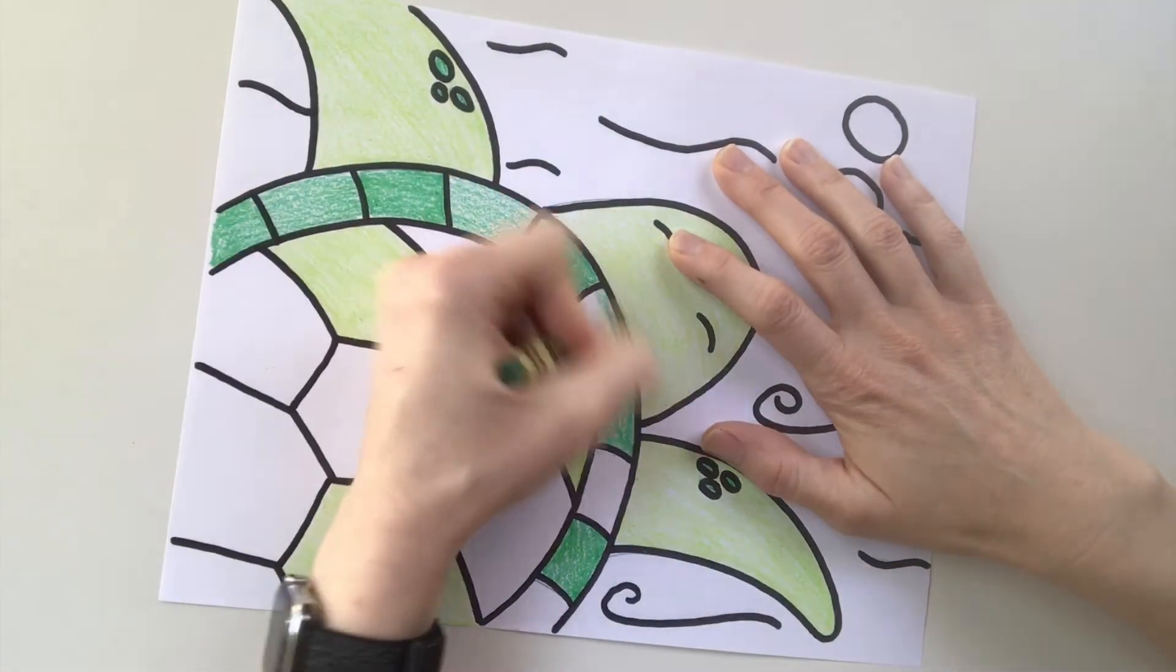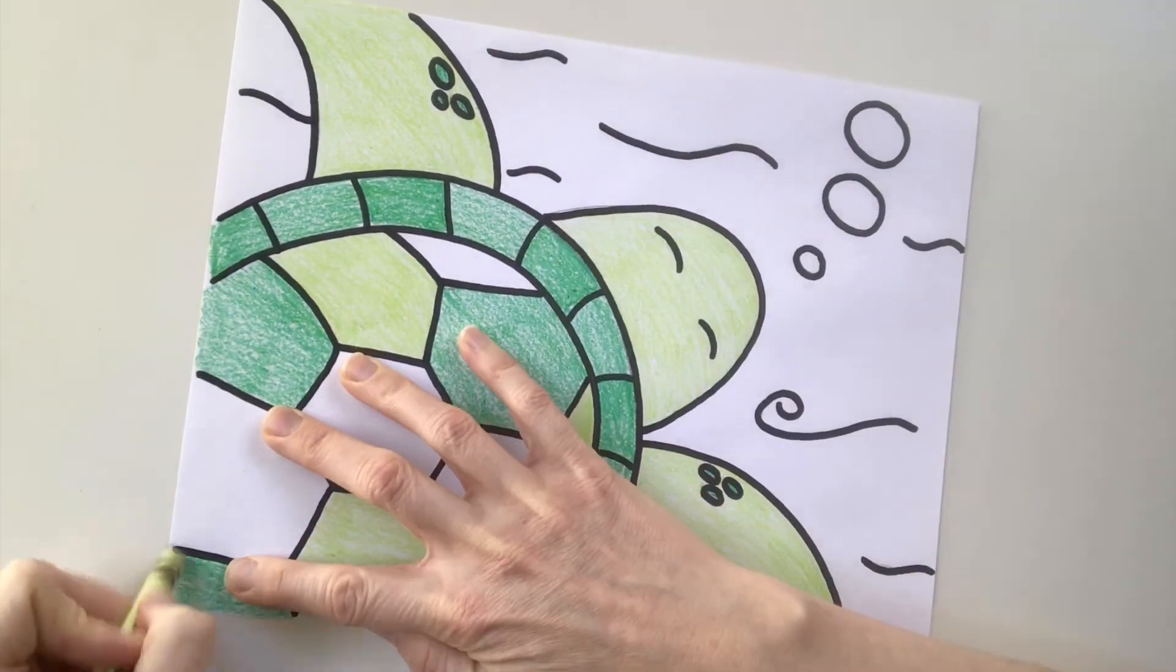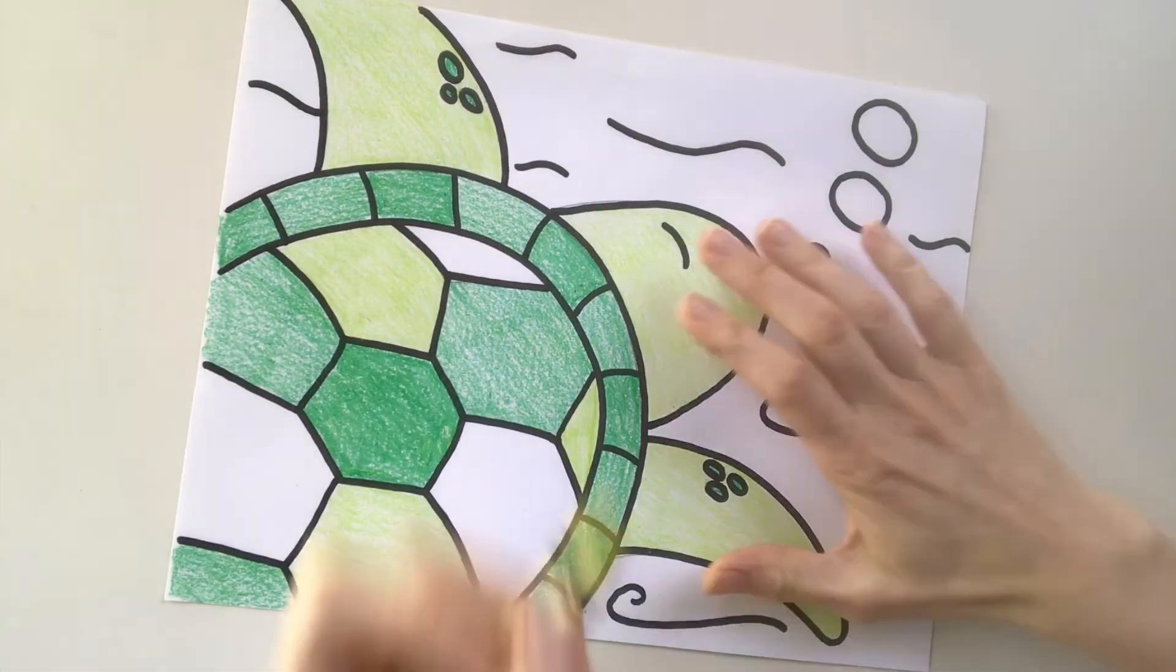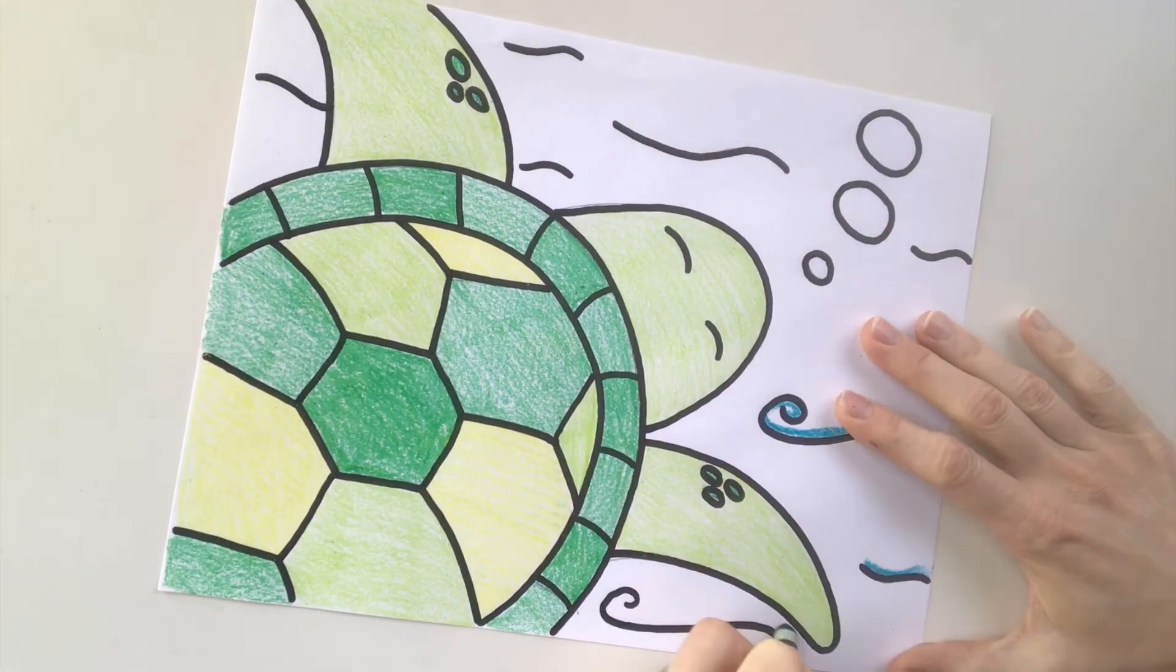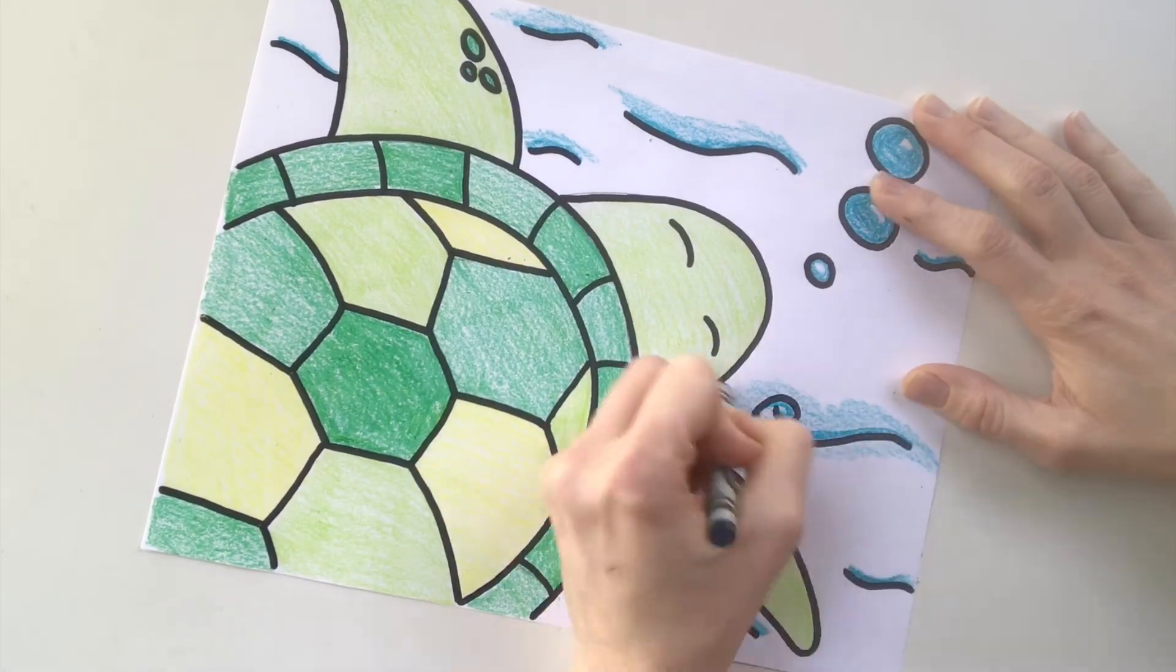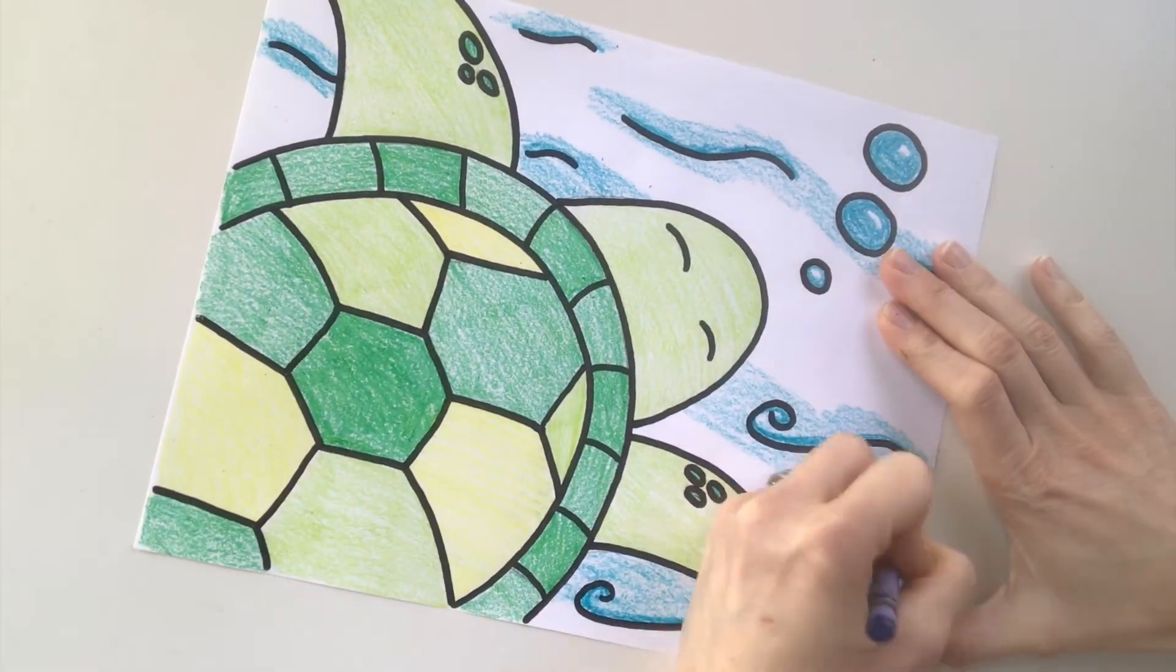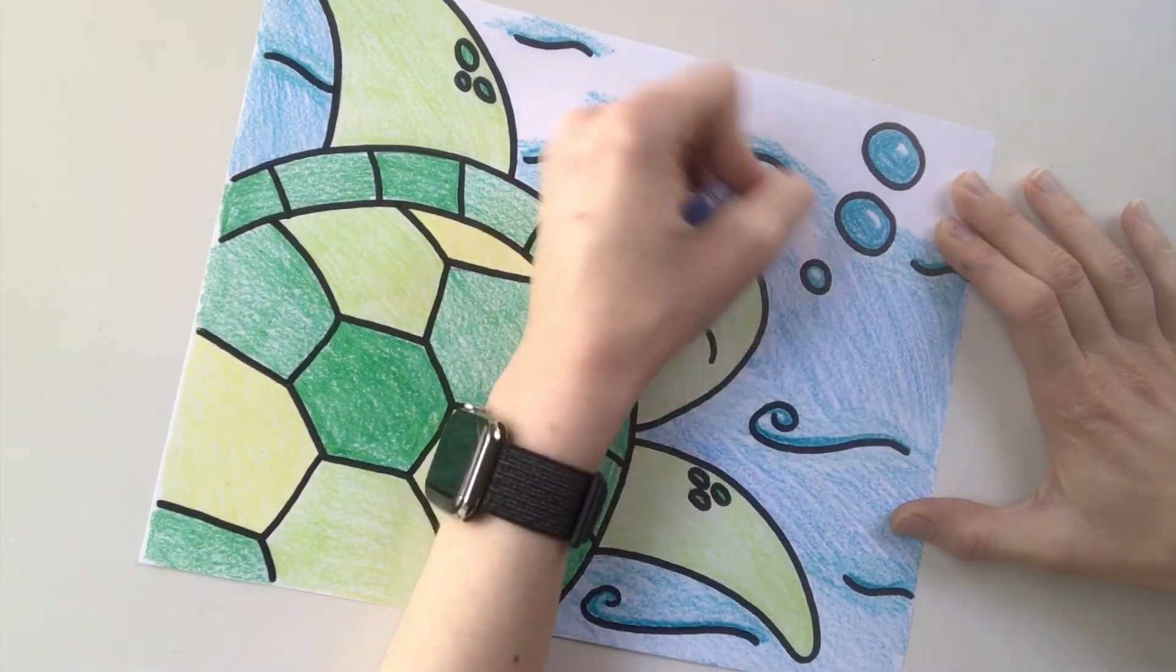This of course is sped up. Take your time when you color. I also change the pressure or how hard I'm coloring to make some areas darker and lighter. Here you can see it over on my waves. I'm pushing hard over the waves so the blue is darker and it shows up. Then I'm coloring more gently in the background to fill the big areas in. There you have it!